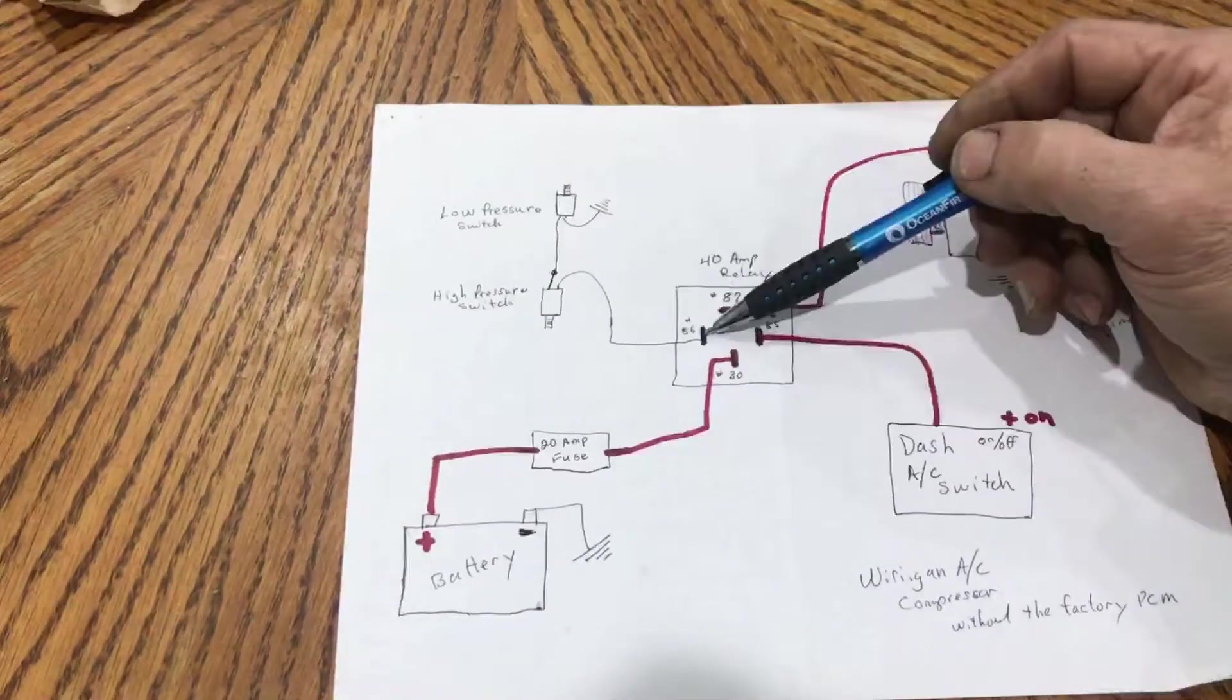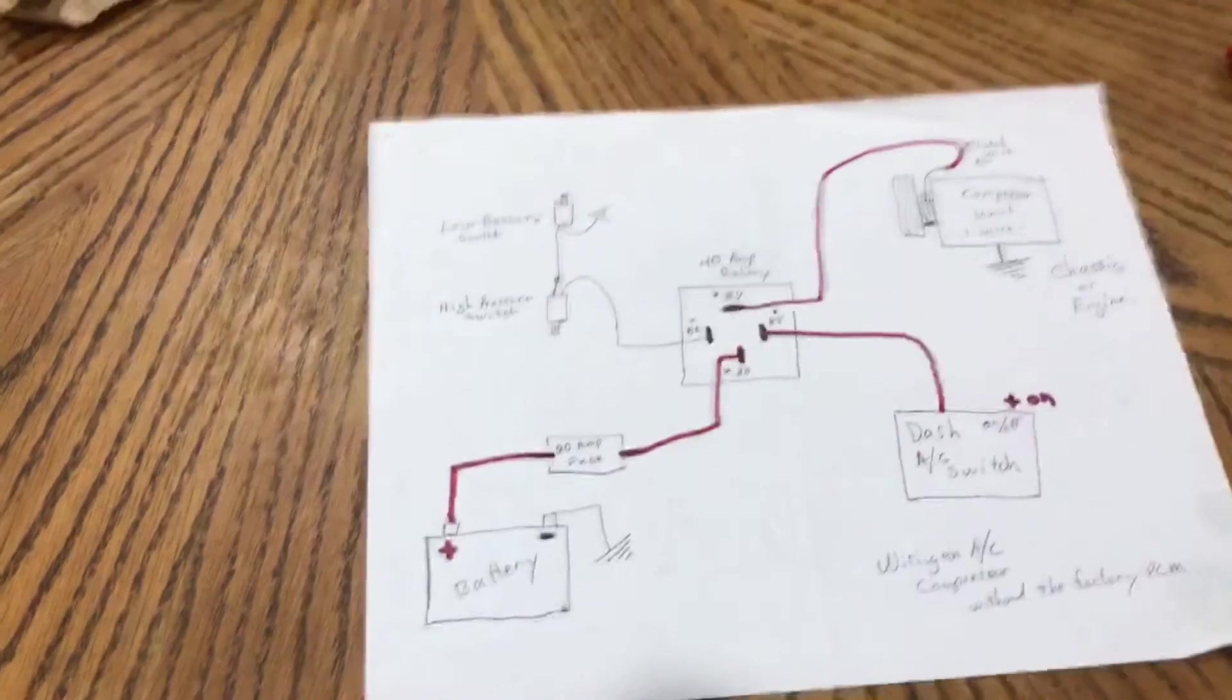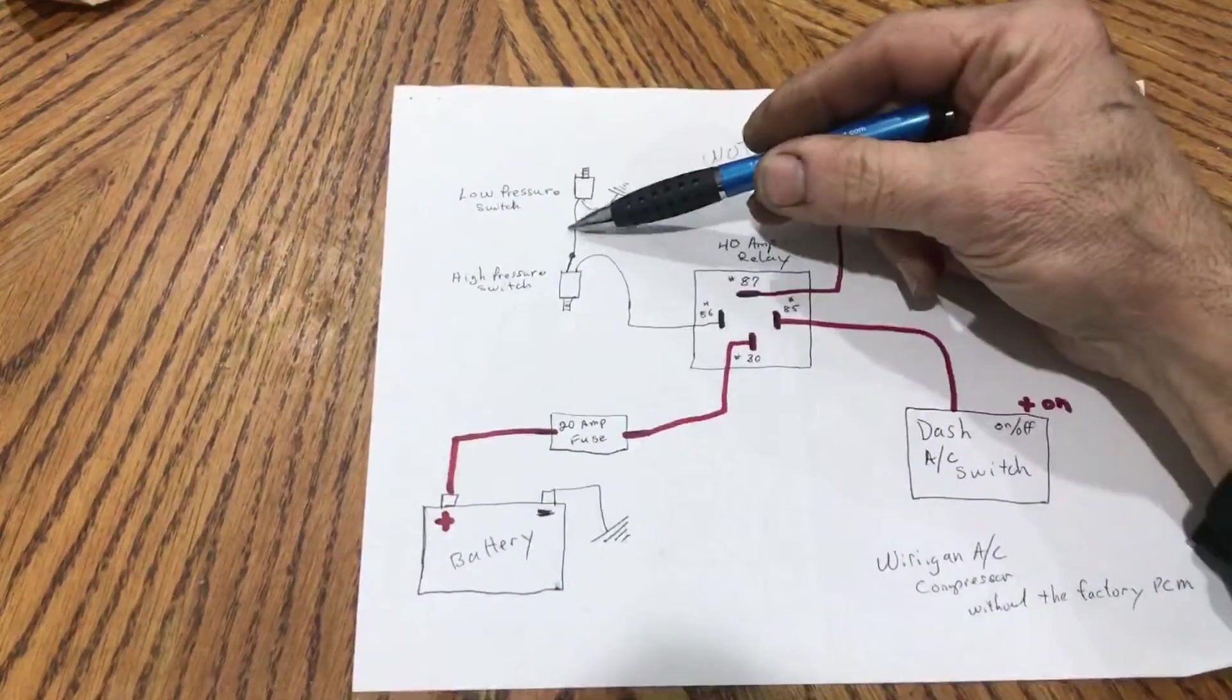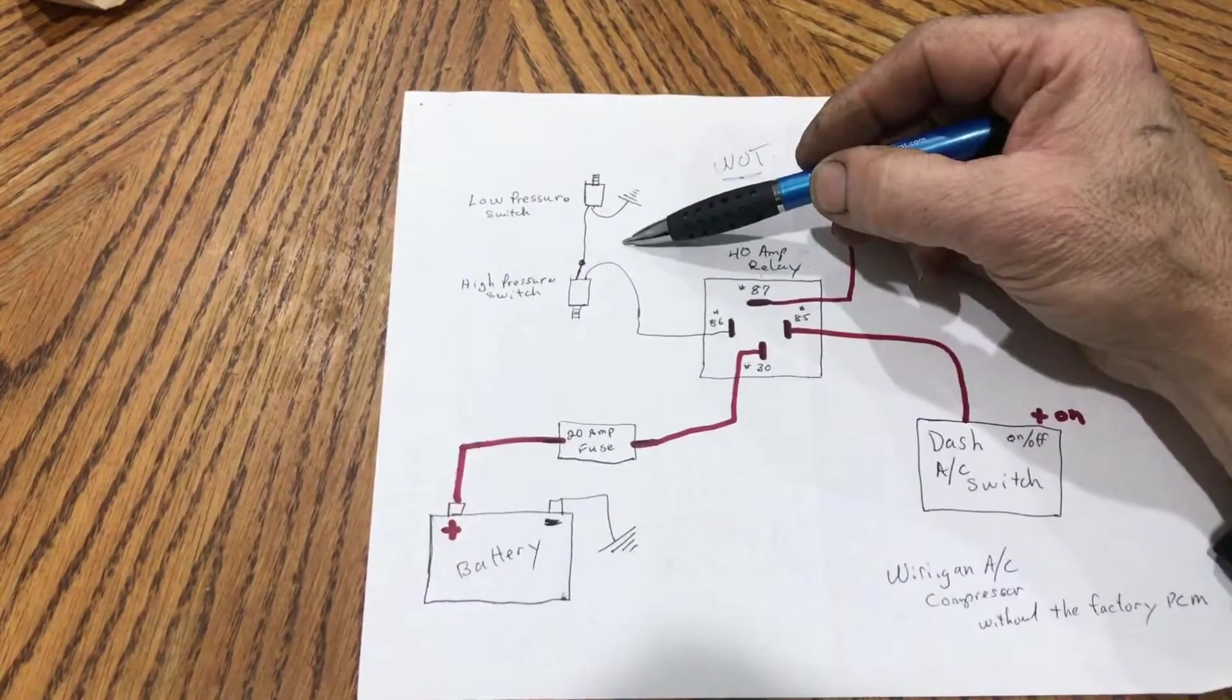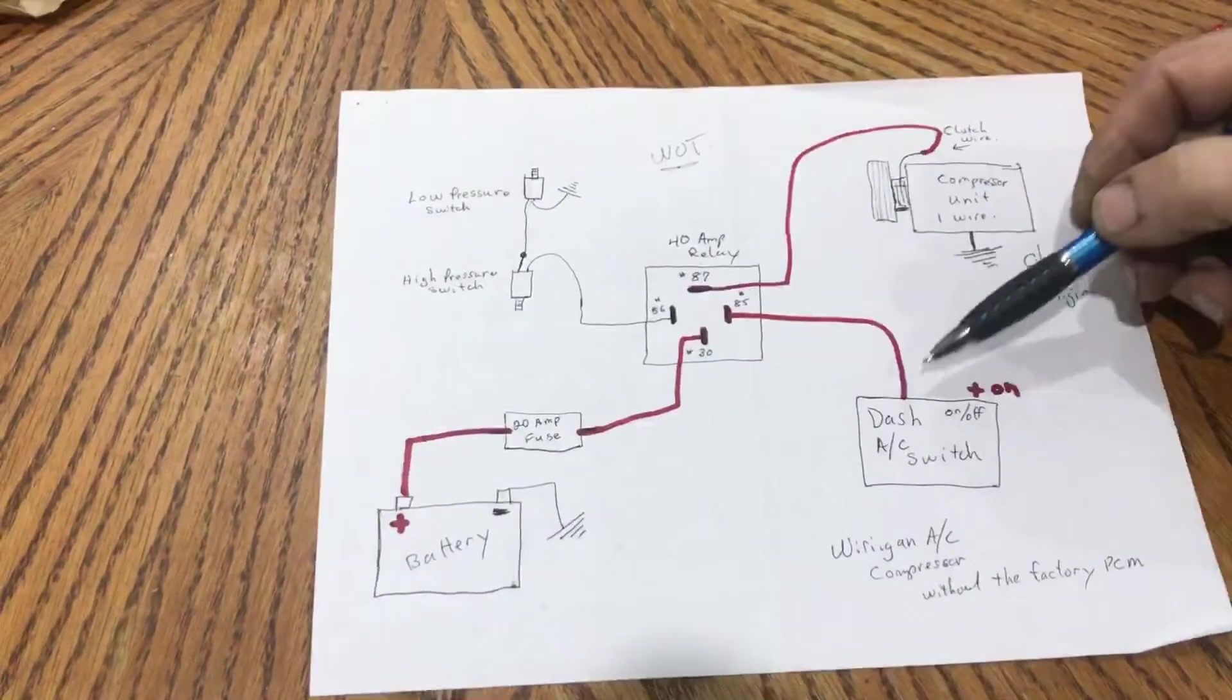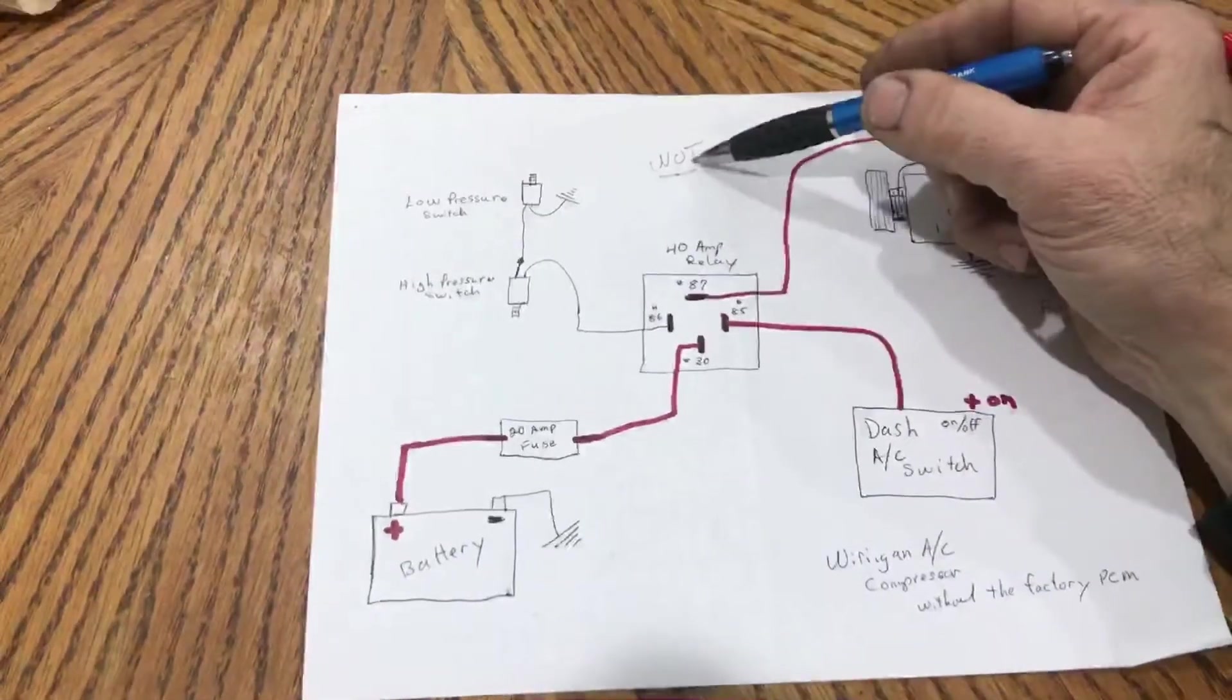I know it gets confusing when you start looking at a whole mess of wires, but this is the easiest way to do it. You could put a wide open throttle switch in here the same way that gets tagged into this ground so that at wide open throttle it breaks the contact and you don't have a compressor spinning at six, seven, eight thousand RPM. But I'd just suggest turn it off and don't worry about it. Obviously you're not racing with the compressor going.